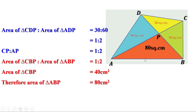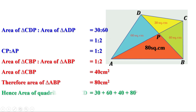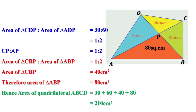Now we have the areas of all four triangles. To find the area of the quadrilateral, we add all the areas together: 30 + 60 + 40 + 80 = 210 cm². That is the area of this quadrilateral is 210 cm².